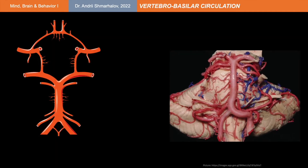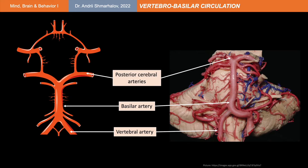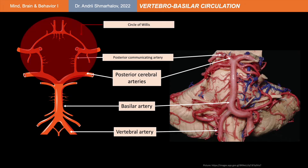Look at the ventral aspect of the brainstem to learn the major vessels responsible for the entire blood supply to this region. At the bottom you can see the right and the left vertebral arteries. After they enter the cranial cavity through the foramen magnum, they climb up along the ventral lateral aspect of the medulla. Between the medulla and the pons they merge together and form the basilar artery, the unpaired vessel that runs up towards the midbrain. Here it gives off the terminal branches, the posterior cerebral arteries, which communicate with the carotid system through the posterior communicating arteries and take part in the formation of the circle of Willis.